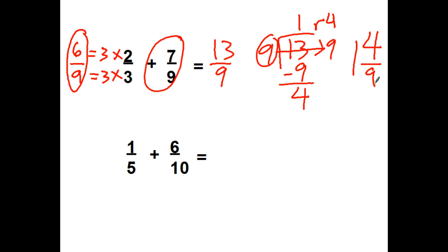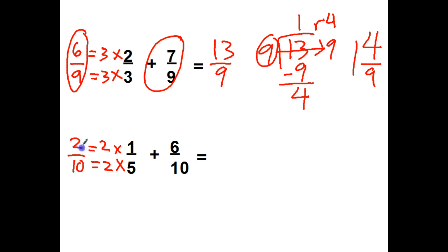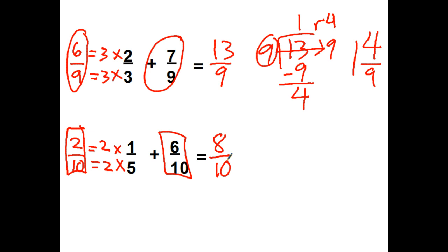1 fifth plus 6 tenths. Check real fast — can I take the smaller one times something to get the larger denominator? Yep, I can go 5 times 2, which means I'm going to take the 1 times 2. I have a 10 for my denominator and a 2 for my numerator. So now I really have 2 tenths plus 6 tenths equals 8 tenths. It's not an improper fraction. I am going to check if I can simplify. Since 8 and 10 are both even, I can divide them both by 2, which is going to get me to 4 fifths.